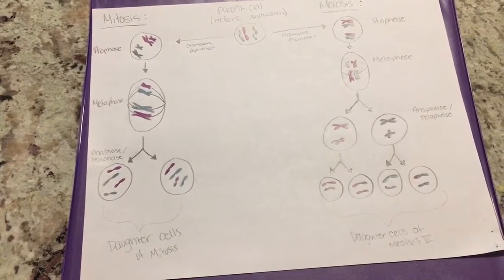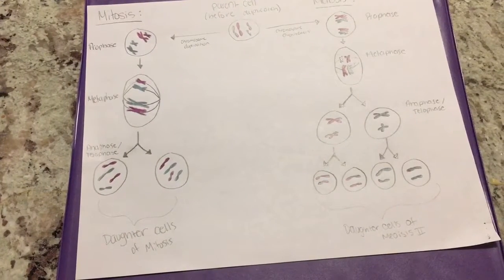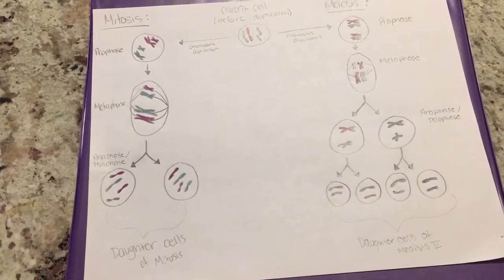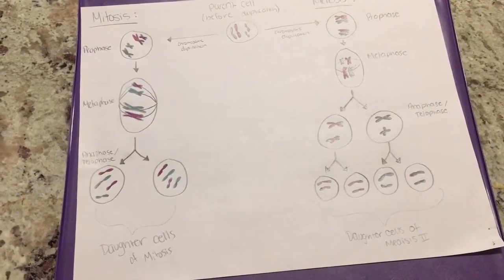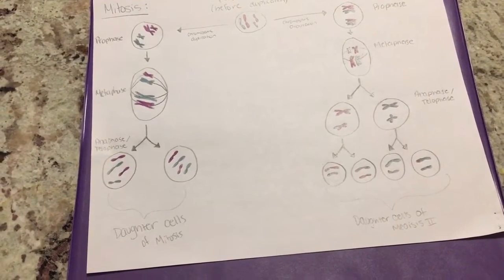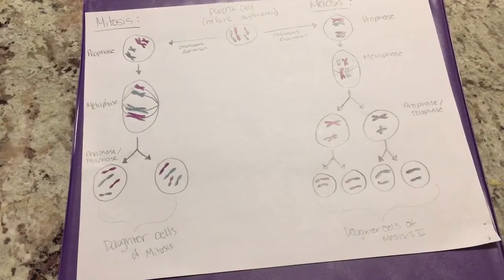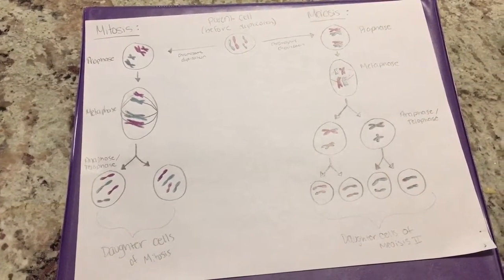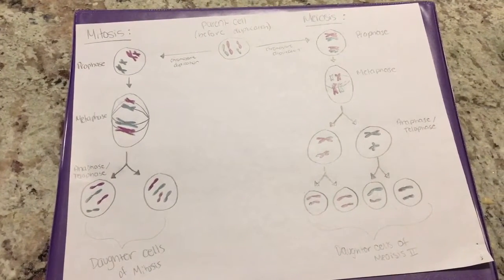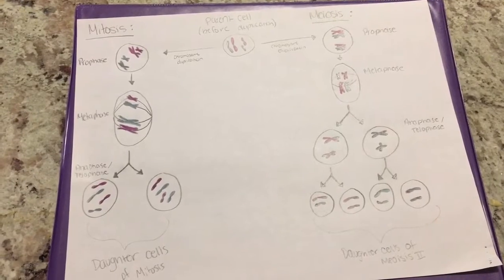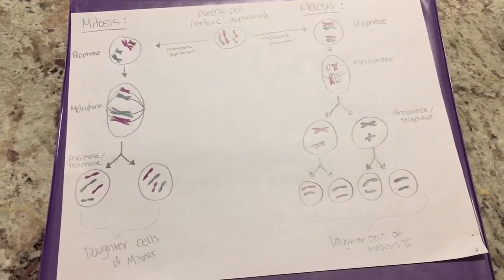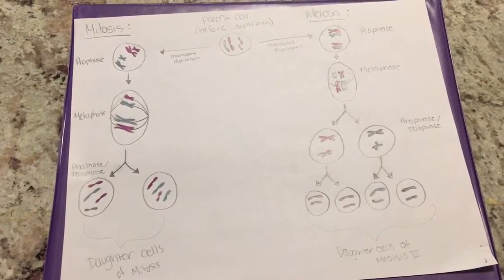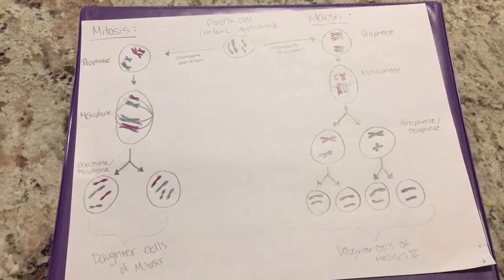Next, in metaphase, spindle fibers attach to the chromosome centromeres and pull tetrads in a vertical line down the center of the cell. During anaphase, the tetrads are pulled away from one another, making half the pairs of chromosomes go to one side of the cell and the other half to the other side. Between the end of anaphase and the beginning of telophase, cytokinesis begins, splitting the cell into two new daughter cells. Telophase then begins, spindle fibers dissolve, and nuclear membranes develop around the chromosomes now found at opposite sides of the new cells.